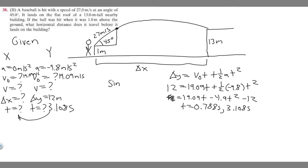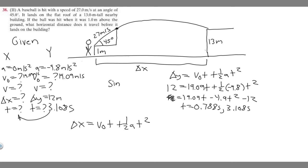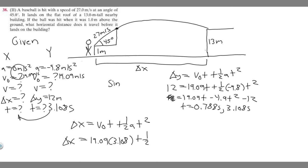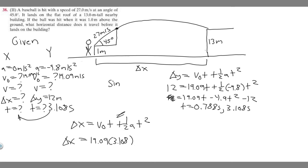Now that we have the time, we can solve for delta x. Using delta x equals v sub zero times t plus one half a t squared, since acceleration in the x direction is zero, the second term drops out. So delta x is simply the initial velocity times the time: 19.09 times 3.108.